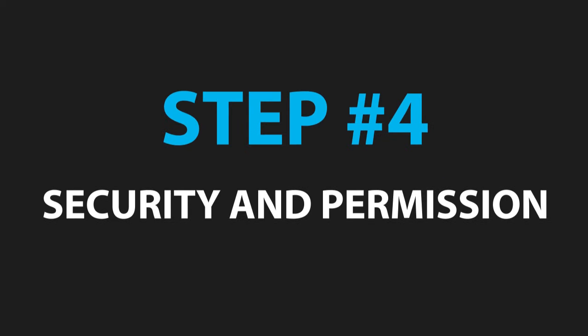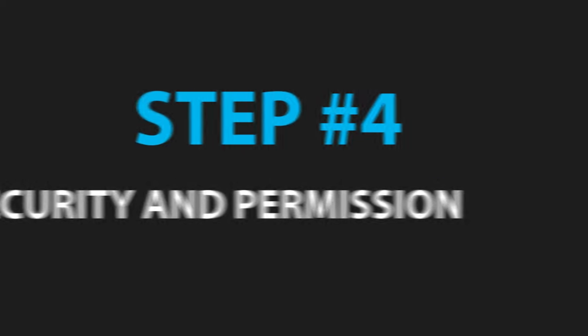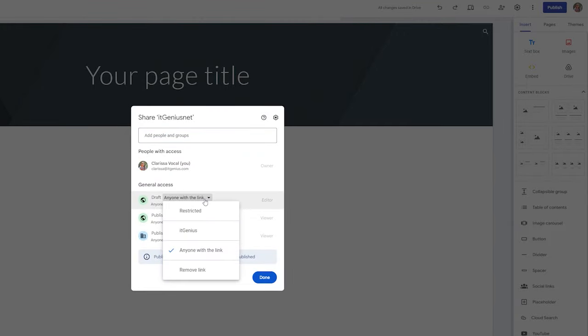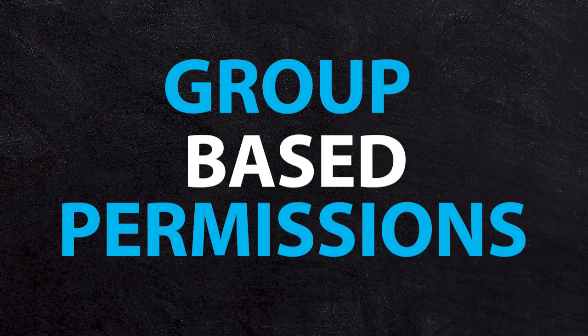Step number four is security and permissions — a very critical step. By default, Google will sometimes expose your Google Site to the world, because you can use Google Sites to create a publicly available website. We don't want that for our intranet because we don't want our business information being leaked or indexed by Google Search. Check your permissions and make sure when you're publishing the site, it's locked down to only people inside your company. My recommendation is to use group-based permissions inside your Google Admin panel.